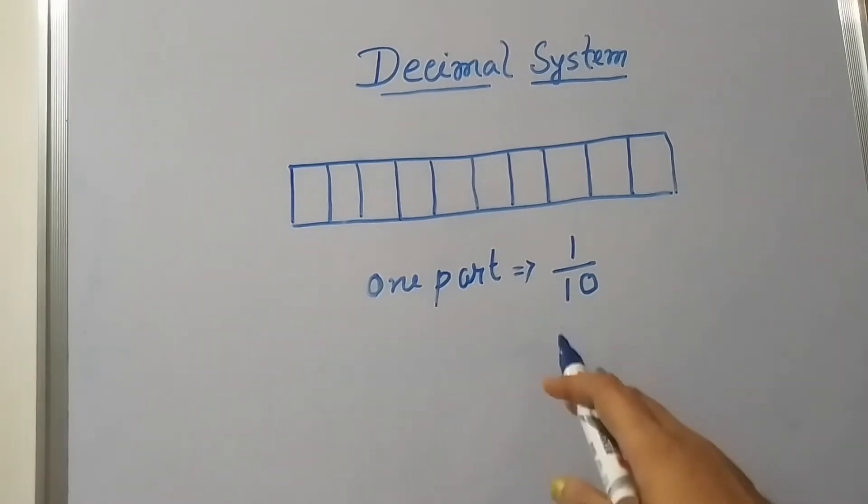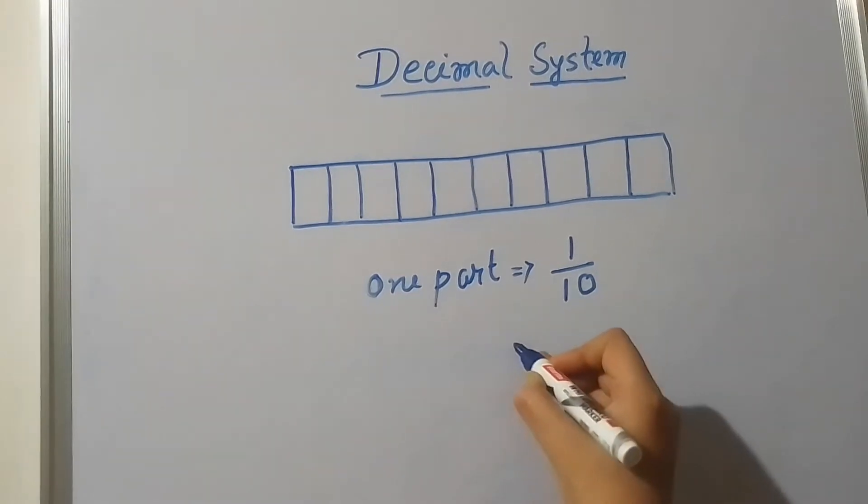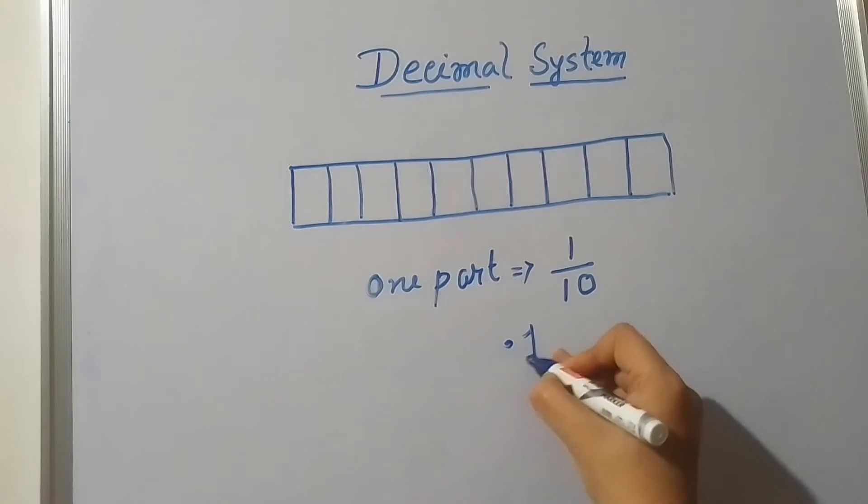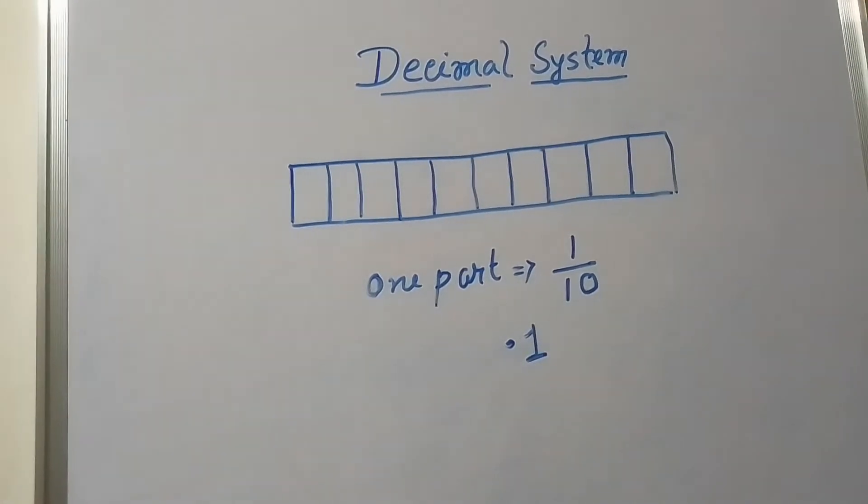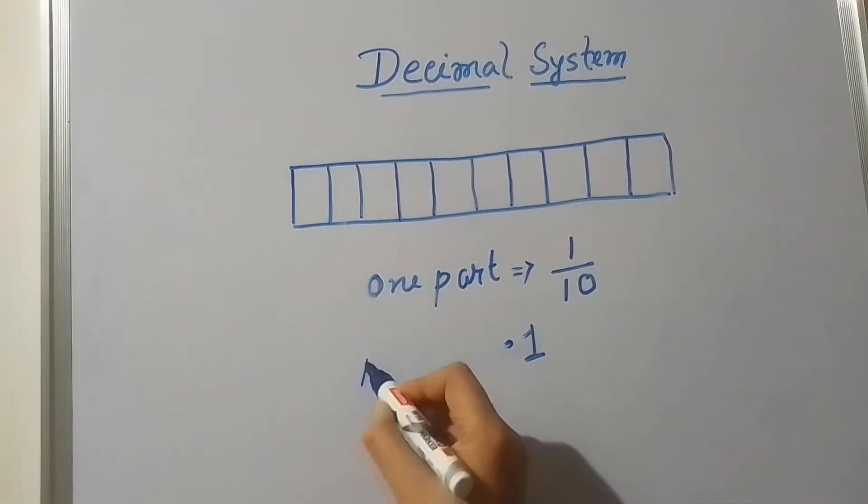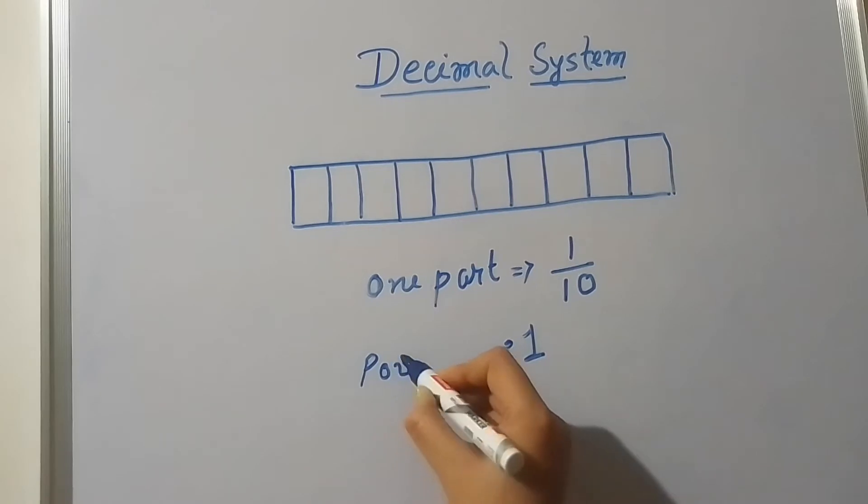Now in another way I can write this fraction, that is point 1. And this is only the decimal conversion of this fraction. Point 1 will be the decimal form of the fraction 1 tenth, or one shaded part of the strip.